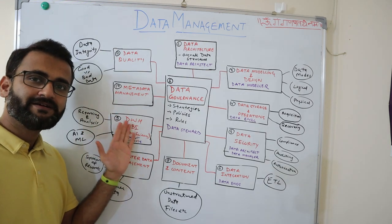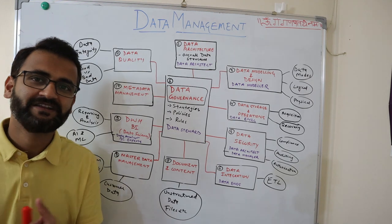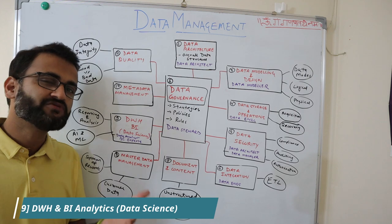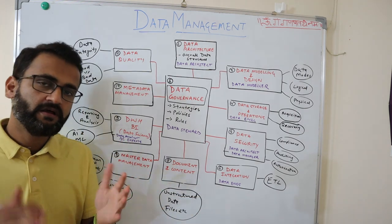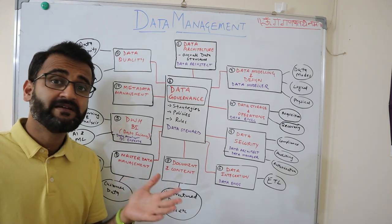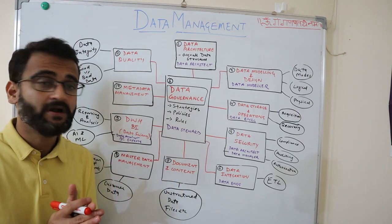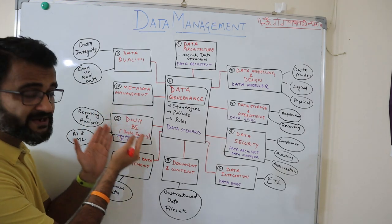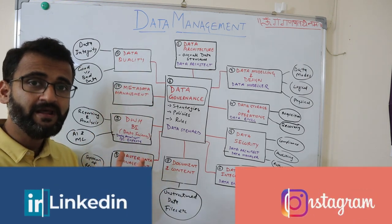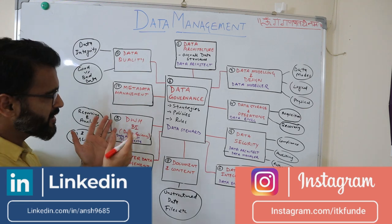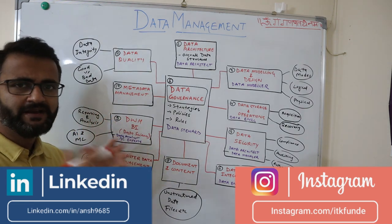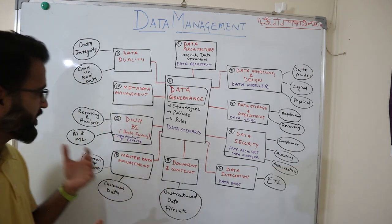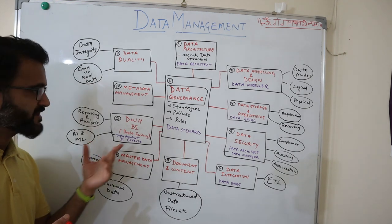The ninth area is data warehousing and business intelligence, which has been my core area since I entered the IT industry. Everything related to reporting, analysis, and storing data in a centralized data warehouse belongs here. I have also included data science within this area because these are now increasingly interrelated — alongside data warehousing projects, we are also seeing a lot of artificial intelligence and machine learning projects coming in from the data science domain. Key roles here include data analyst and BI expert.